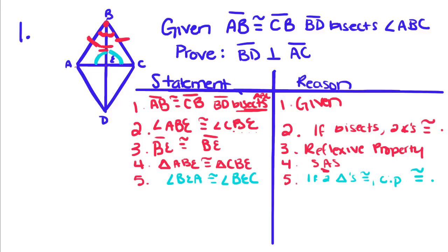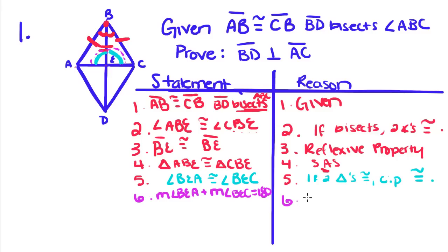If you look, these two angles have a special relationship — they are supplementary because they form a linear pair. One of our theorems states that a linear pair of angles is supplementary. So we can say that the measure of angle BEA plus the measure of angle BEC equals 180 degrees. The reason is: if two angles form a linear pair, then they are supplementary.